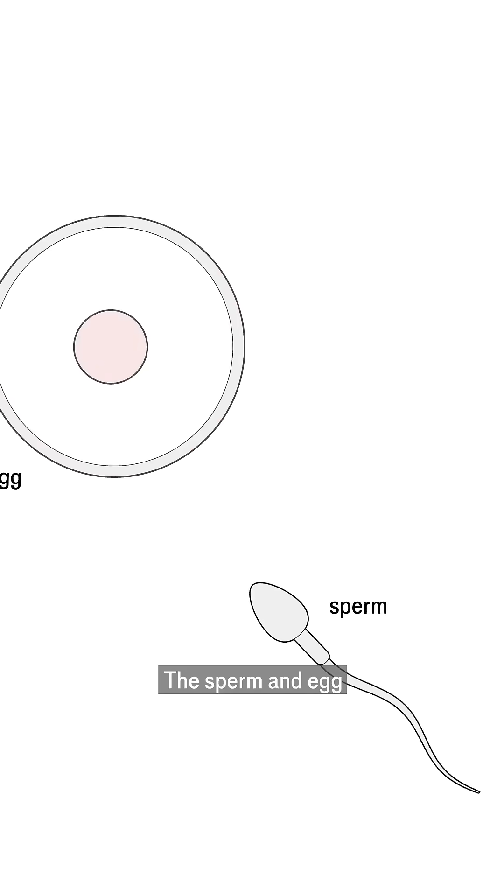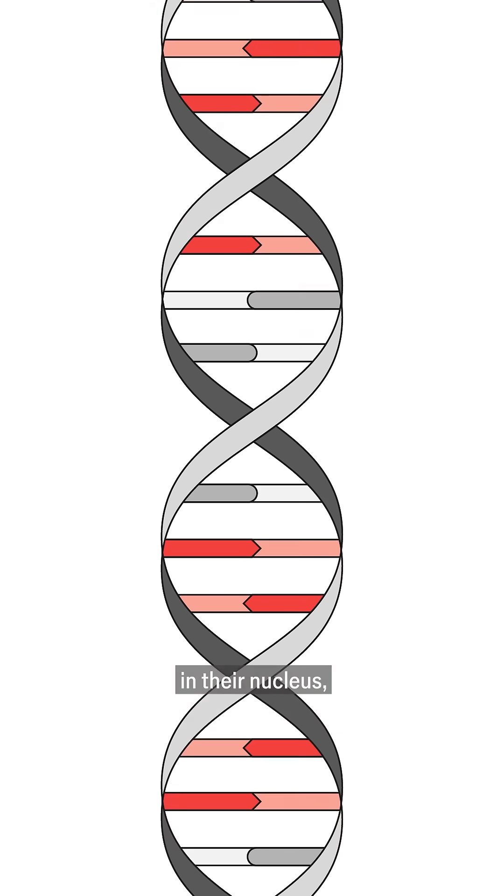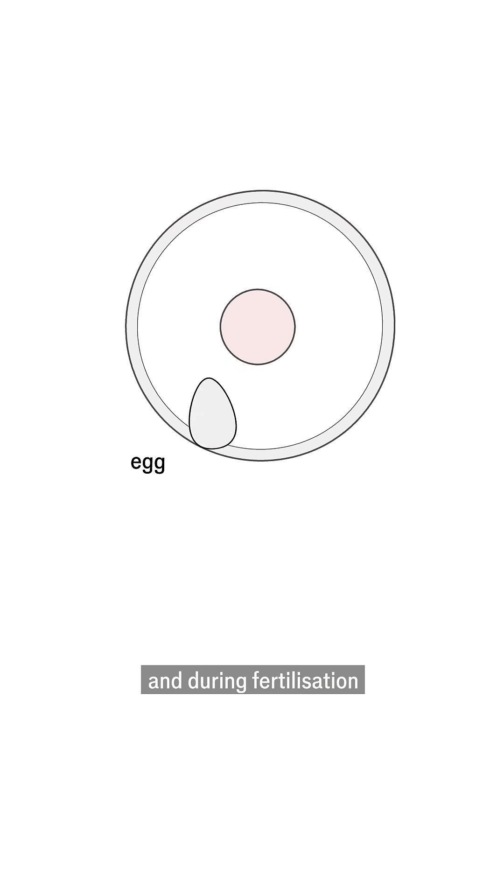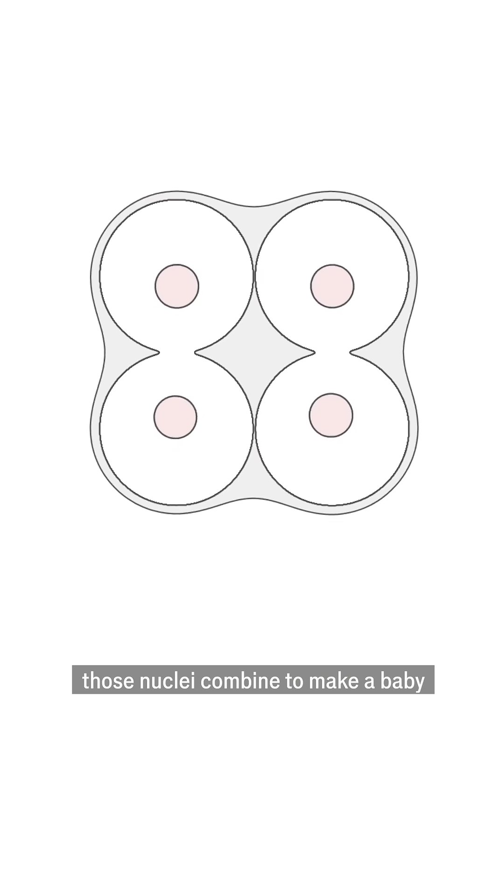The sperm and egg each contains half the DNA of the parent in their nucleus, and during fertilization, those nuclei combine to make a baby.